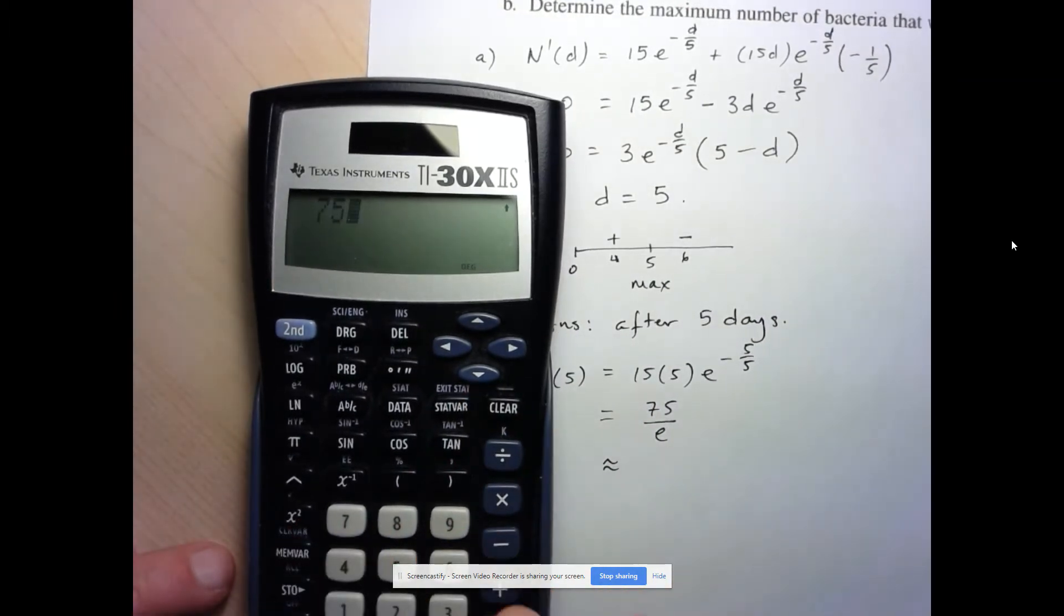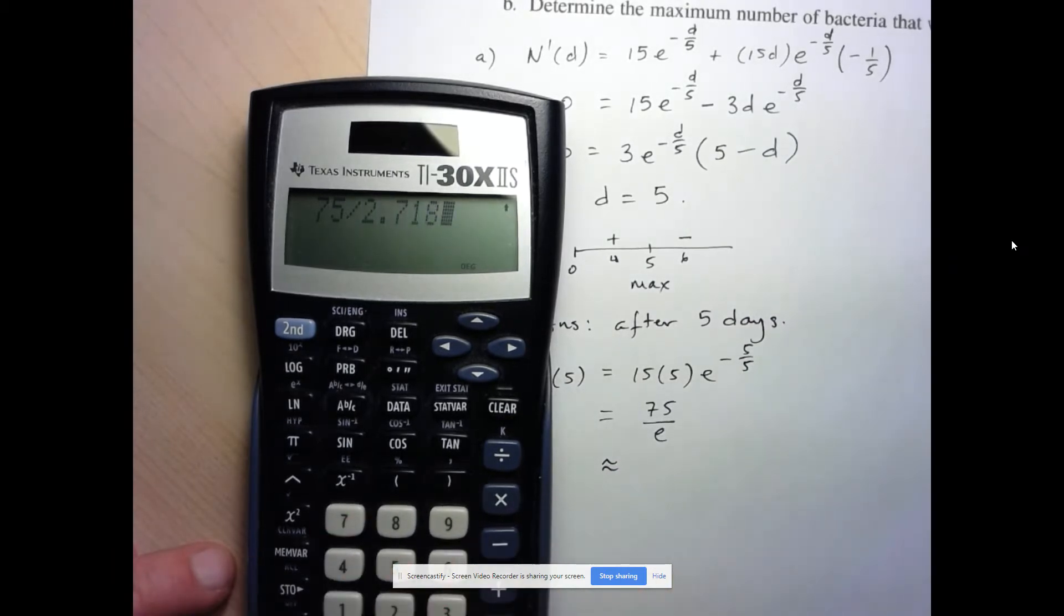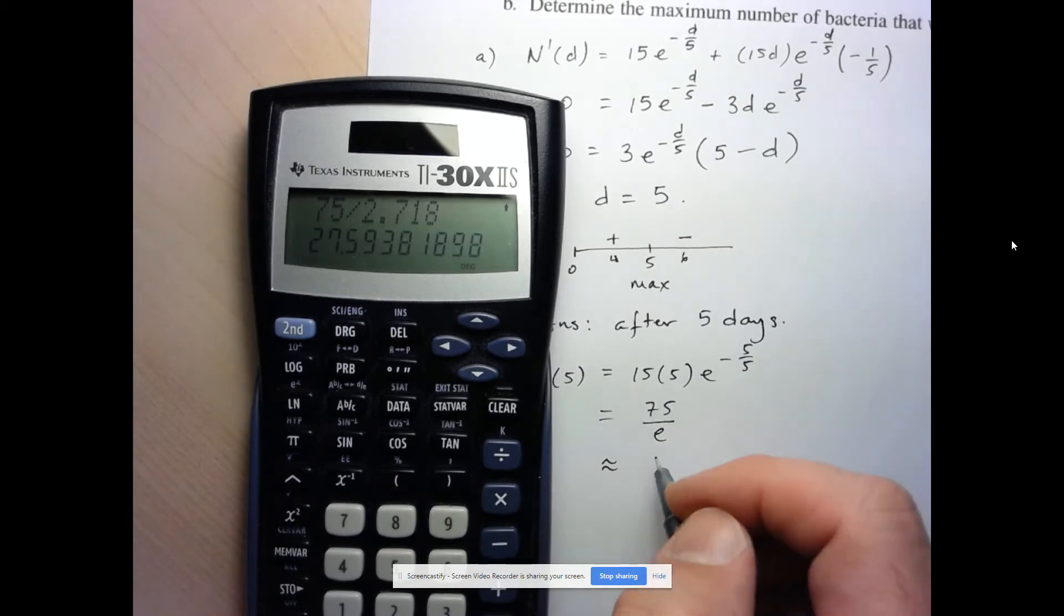Let's get our calculator and let's approximate this. So we've got 75 divided by E is about 2.718. So there we've got 27.6.